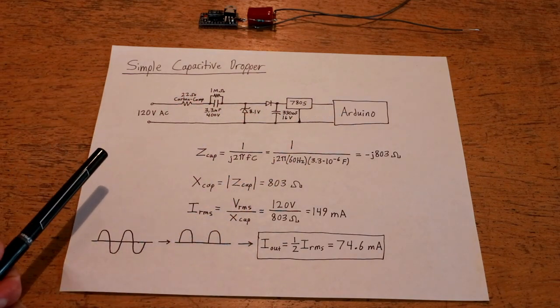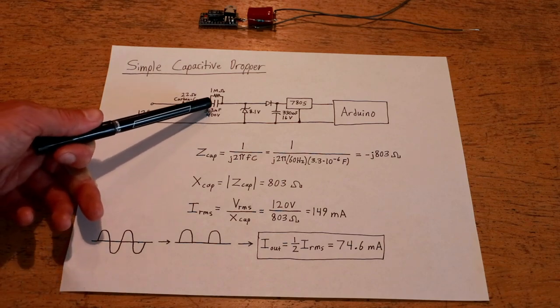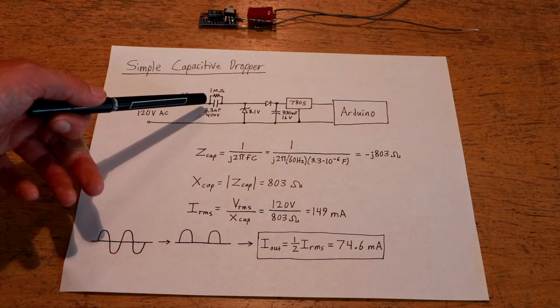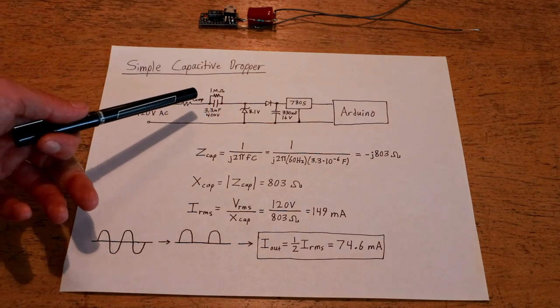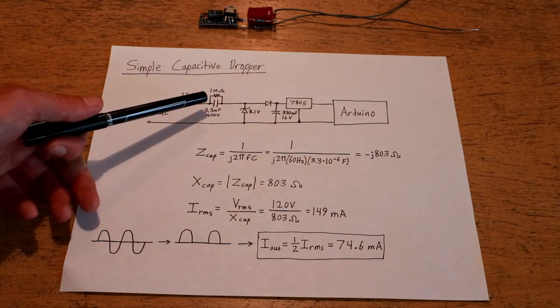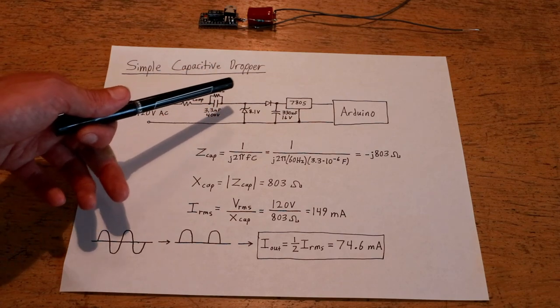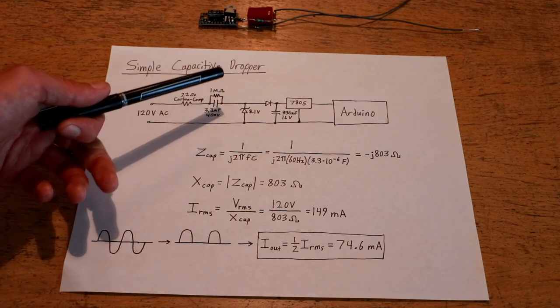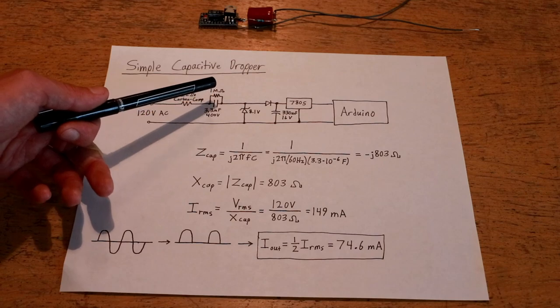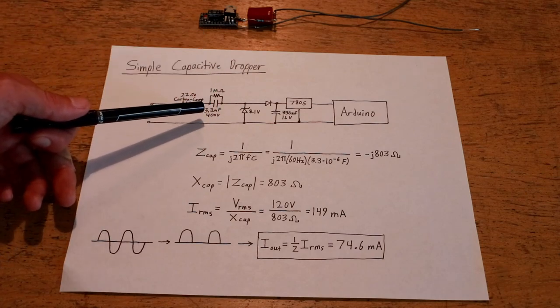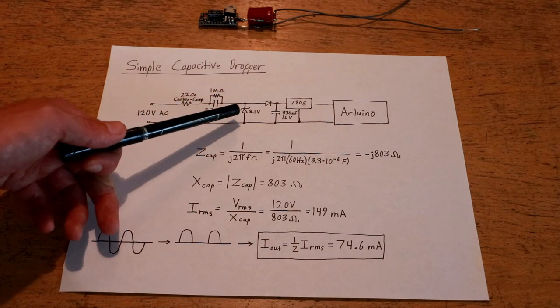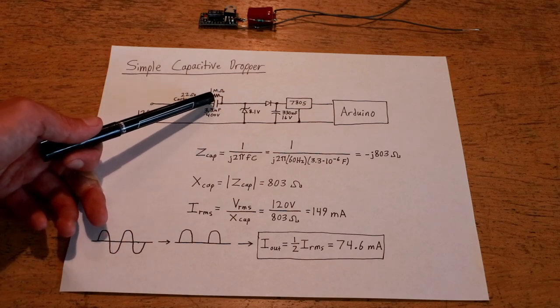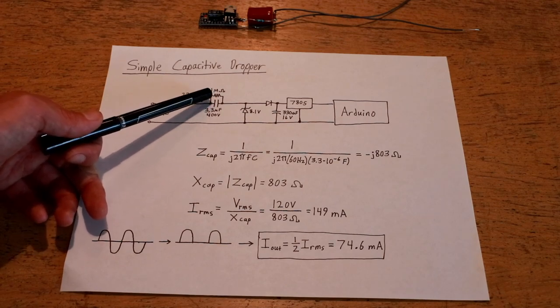The way that a capacitive dropper works fundamentally is by using the reactance of a capacitor as a non-dissipative current limiting device. You could achieve this same circuit using a resistor, but on an AC supply a resistor would dissipate basically all of the heat from the current being driven through it, whereas a capacitor effectively charges up and discharges with voltage. As the voltage rises and falls, it limits the current that can flow into the zener diode at a particular time. By doing that, it actually provides a current limiting feature without actually dissipating any power.